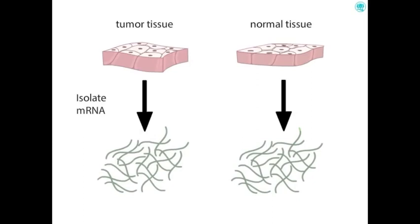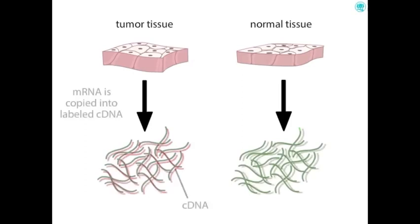In this activity, mRNA was extracted from breast cancer tissue as well as from normal breast tissue, so that we can see which genes are expressed. To visualize these, a DNA copy is made of this mRNA using an enzyme called reverse transcriptase, producing cDNA. A label is added to the cDNA during its synthesis, so it's easy to differentiate.